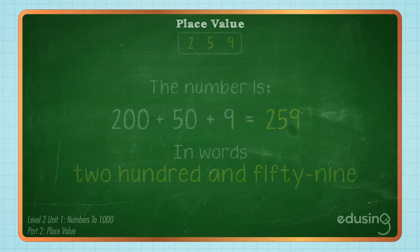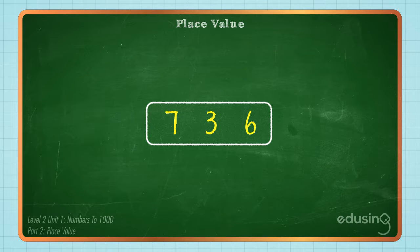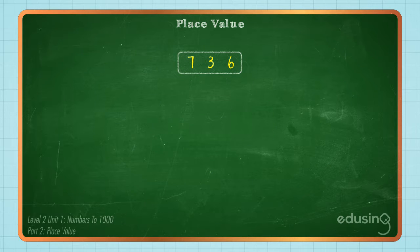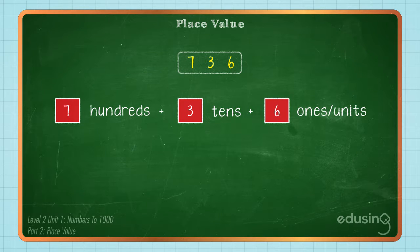Now, let's look at this number. We can say that there are 7 hundreds, 3 tens and 6 ones or units. So, the number is 700 plus 30 plus 6 equals 736.